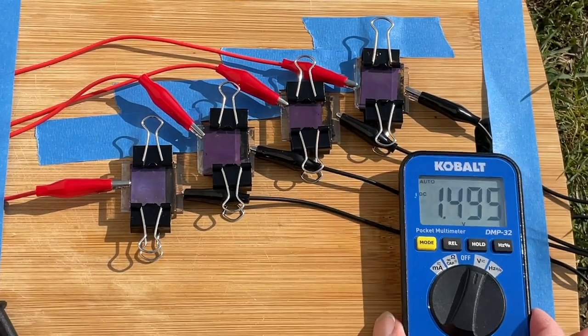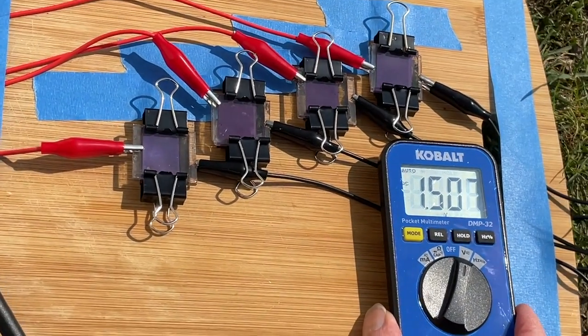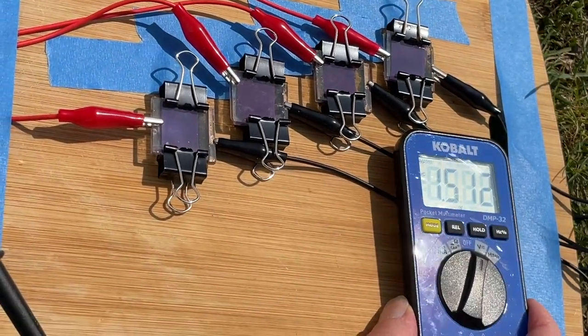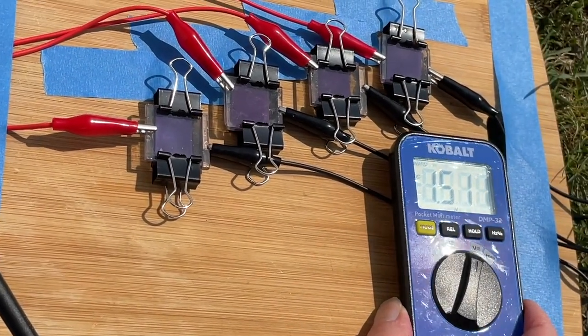One other interesting thing to look at is the effect of the intensity of the sunlight on the voltage of the solar cells. When I tip the panels to get direct sunlight, I get the maximum voltage. When I tilt them away from the direct sunlight, the voltage decreases.